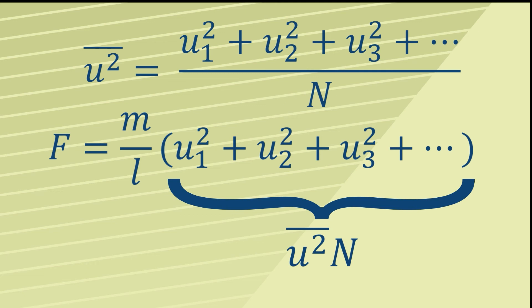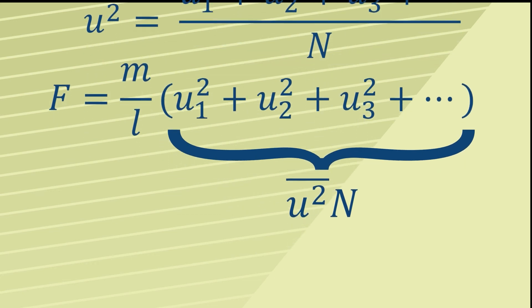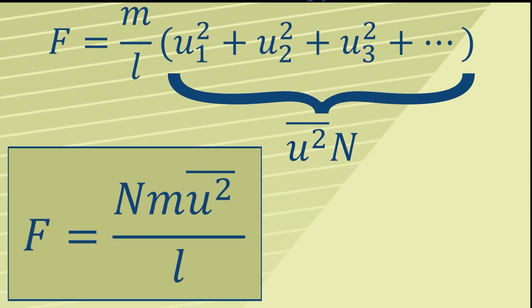We can therefore substitute for said difficult bit inside the bracket with mean square speed times n. This therefore leads us to a nice simple little formula for the force on the wall caused by n particles, and that force is n m mean square speed, all divided by L.